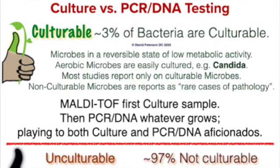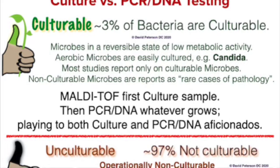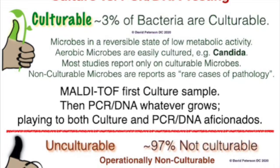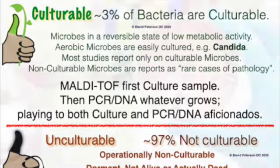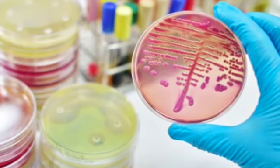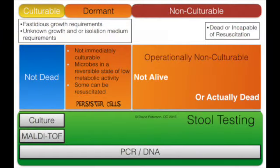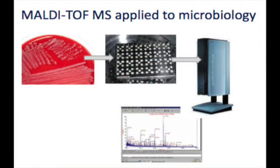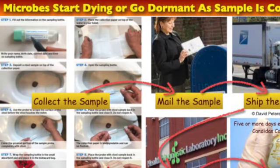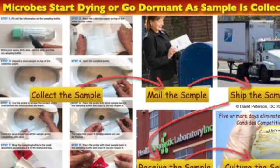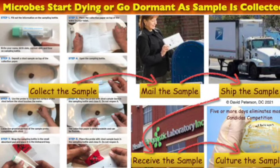Less than 3% of bacteria are culturable. Aerobic microbes are easily cultured — for example, Candida. Most studies report only on culturable microbes: if they can't grow it, it doesn't exist. Non-culturable microbes, because they can't grow them, are reported as rare cases of pathology. Labs using multi-TAV technology must first culture the sample, then do a PCR DNA test on whatever grows. By doing this, they play to both the culture and the PCR aficionados.